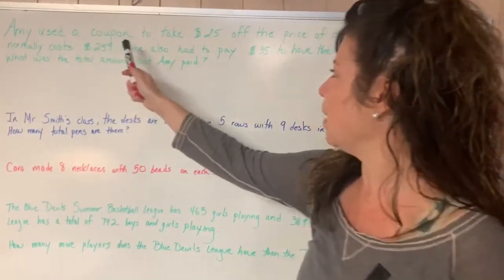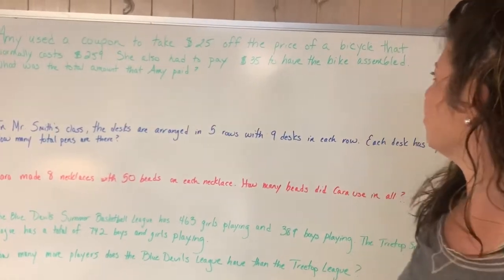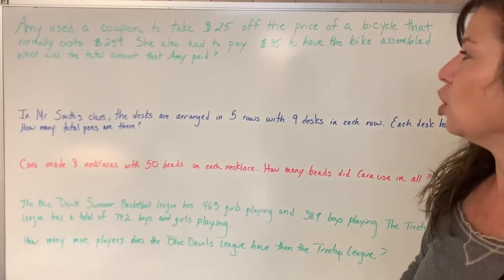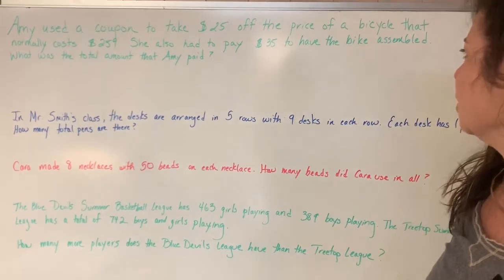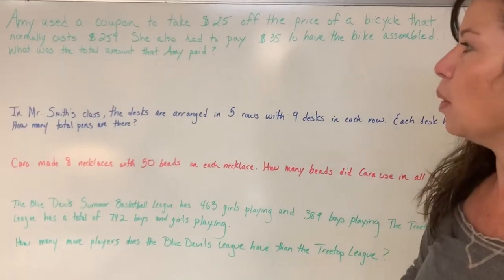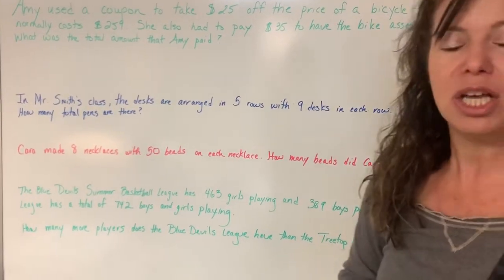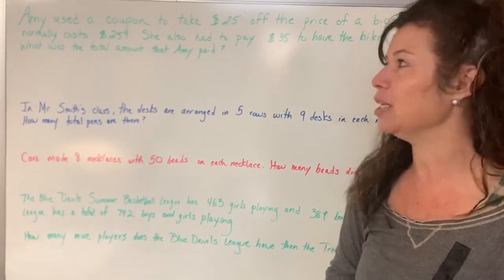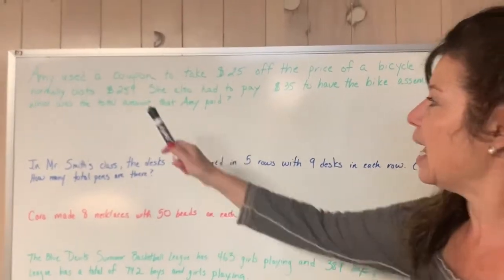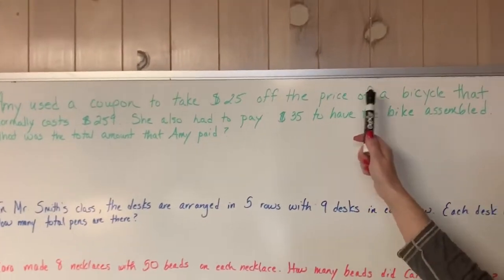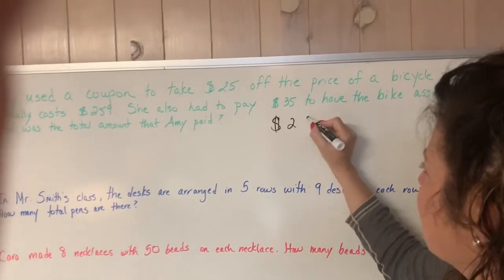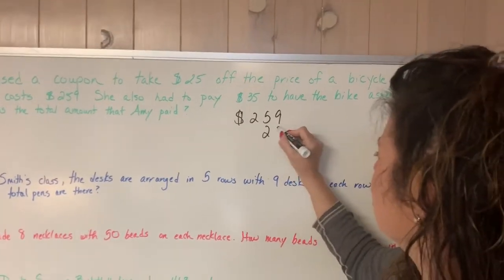Amy used a coupon to take $25 off the price of a bicycle that normally costs $259. She also had to pay $35 to have the bike assembled. What was the total amount that Amy paid? Just like in class, I actually read sentence by sentence and then choose the operation. So let's look at the first sentence. Amy used a coupon to take $25 off the price of a bike that costs $259. So right there I know to subtract.